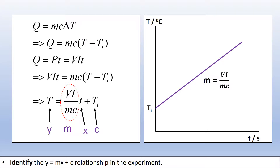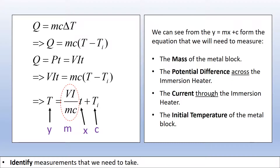That gives us guidance about what measurements we're going to need to take. To determine C, we're going to need to measure the mass of the block we're investigating, the potential difference across our immersion heater, the current through the immersion heater, and at various times, the temperature of our block. Those are our measurements.